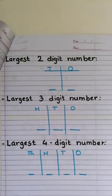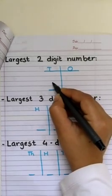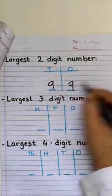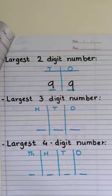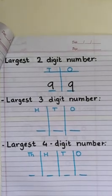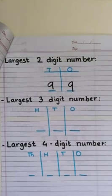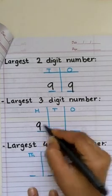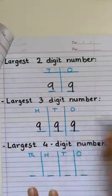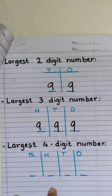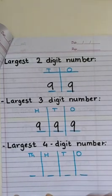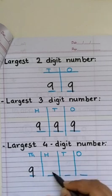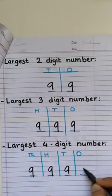Do you remember the largest 2-digit number? Think about it. Yes, 99. Great. Now, largest 3-digit number will be very easy to guess. 999. And similarly, largest 4-digit number will be 9,999.